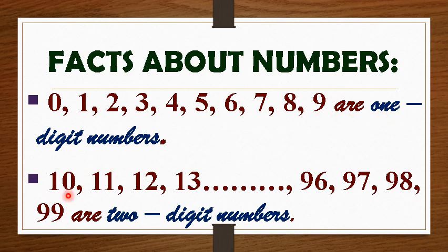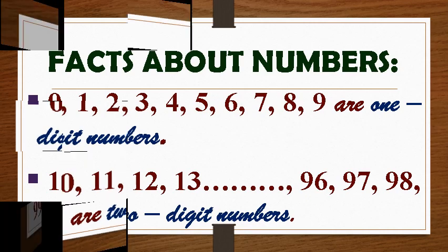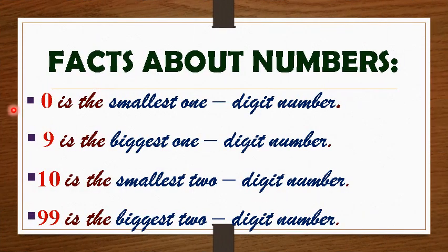The numbers 10 to 99 are two-digit numbers. 0 is the smallest one-digit number. 9 is the biggest one-digit number. 10 is the smallest two-digit number. 99 is the biggest two-digit number.